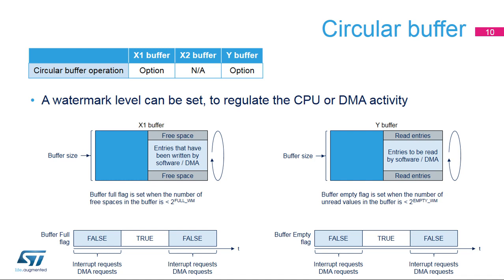The write pointer is not incremented in the event of an overflow. Regarding the Y buffer, if the number of unread data in the buffer is less than the watermark threshold programmed in the empty_WM field of the FMAC_Y_BUFF_CFG register, the buffer is flagged as empty. As long as the empty flag is not set, interrupts or DMA requests are generated if enabled to request reads from the buffer. The watermark allows several data to be transferred under one interrupt without danger of underflow. Nevertheless, if an underflow does occur, the UNFL error flag is set. In this case, the read pointer is not incremented and the read operation returns the content of the memory at the read pointer address.